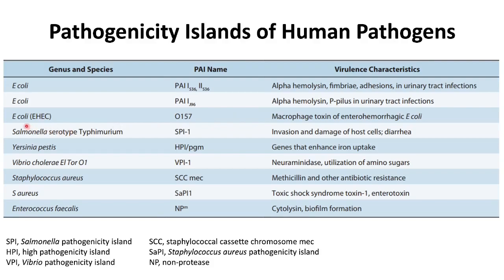Among diarrhoeagenic E. coli O157, the pathogenicity island has virulence traits like macrophage toxins of EHEC. Similarly, among other pathogens like Salmonella typhimurium, Salmonella pathogenicity island 1 is present, which is responsible for invasion and damage of host cells and is responsible for diarrhea.